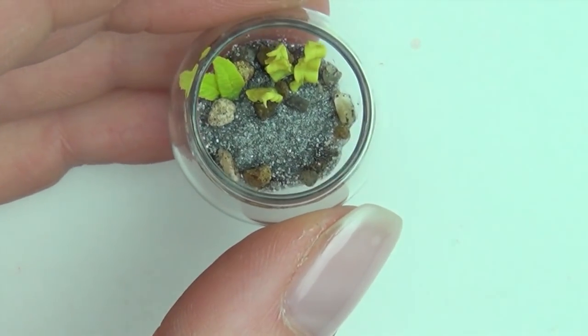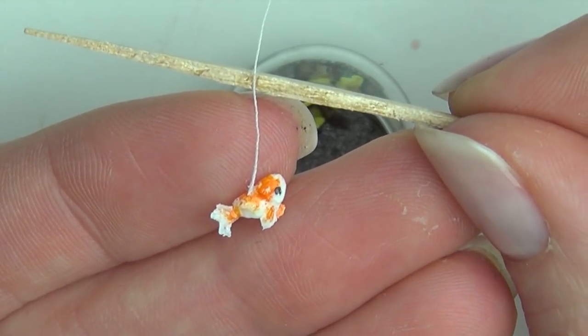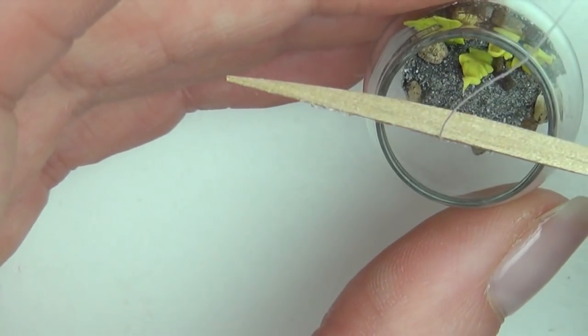Now that the base has set, we're going to move on to the resin. To keep one of my fish floating off the bottom, I glued it to a toothpick with a string.